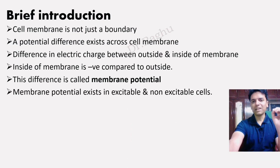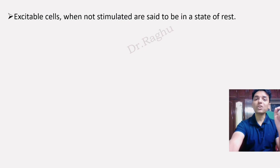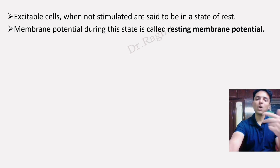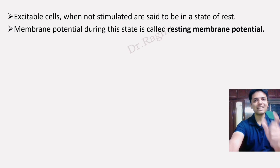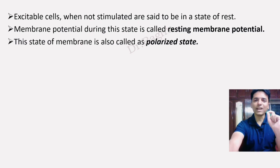Membrane potential exists in both excitable cells and non-excitable cells. The cell membrane of excitable cells, when not stimulated, is said to be in a state of rest. The membrane potential — the difference in electrical potential between outside and inside of the cell membrane — during this resting state is called the resting membrane potential. This state is also called a polarized state.